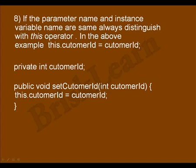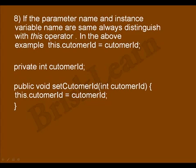Eighth, if the parameter name and the instance variable name are the same, you can distinguish them with the 'this' operator. For example, 'private int customerId' is an instance variable. And in the setCustomerId method, the parameter 'int customerId' is a local variable. Both are named customerId, but you can differentiate them using this.customerId = customerId, where 'this.customerId' refers to the instance variable.